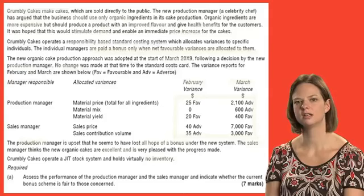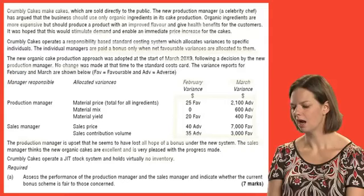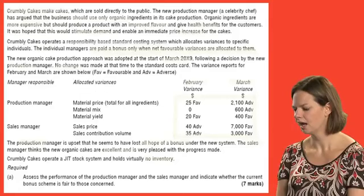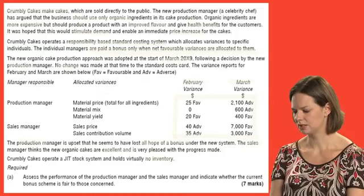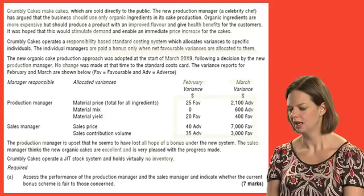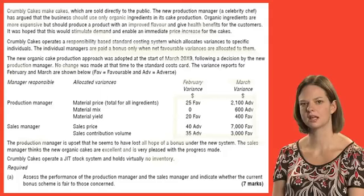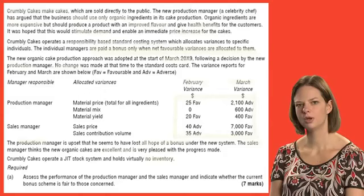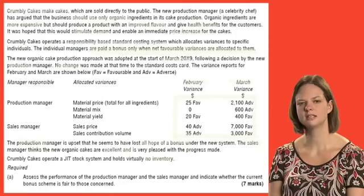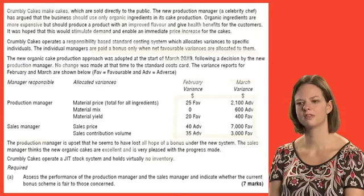We're given that these organic ingredients lead to improved flavour and health benefits to the customer. All of this is background information and it's important to bear in mind as we read through the rest of the scenario. Very importantly, it's a responsibility-based standard costing system and the managers only get a bonus when favourable net variances are allocated to them. The change starts in March in production but no changes are made to the standard costs, so the variances calculated are based on the old costs which include the non-organic ingredients.